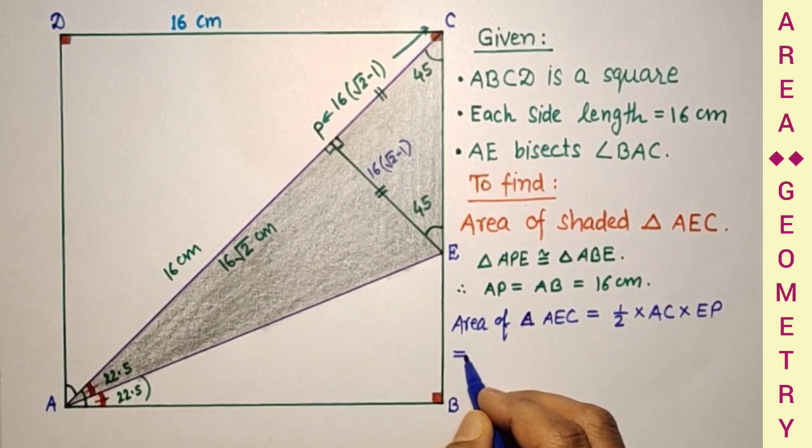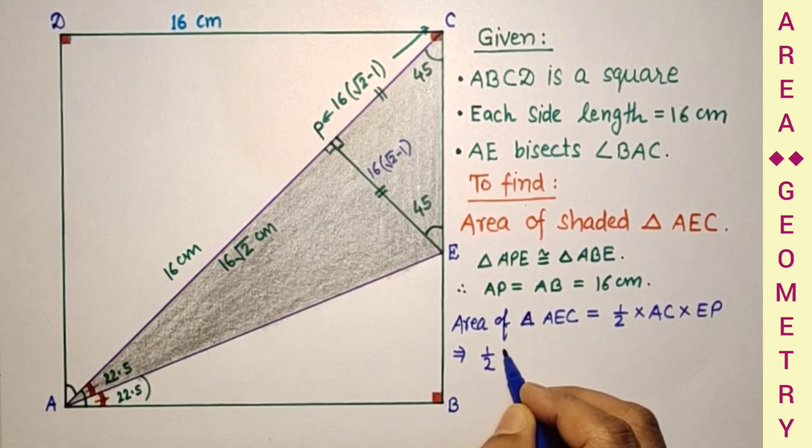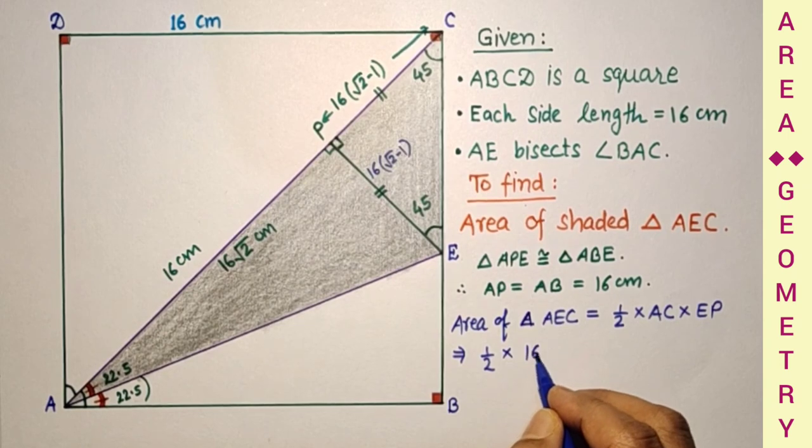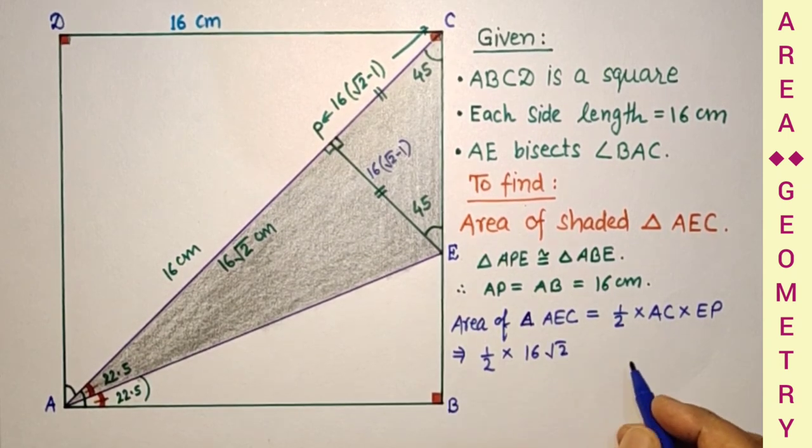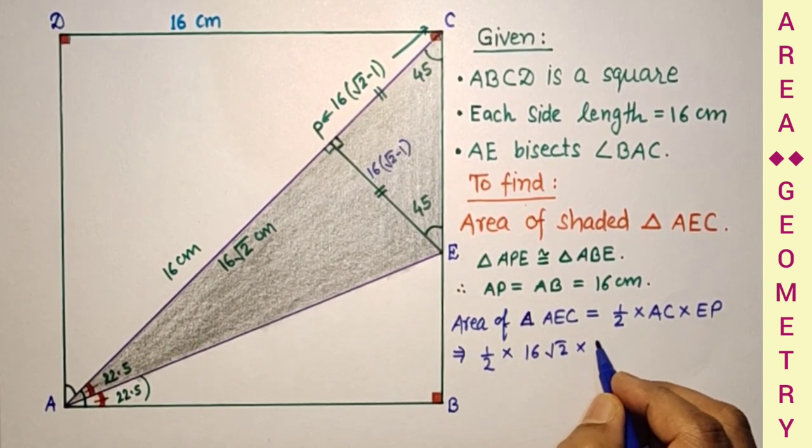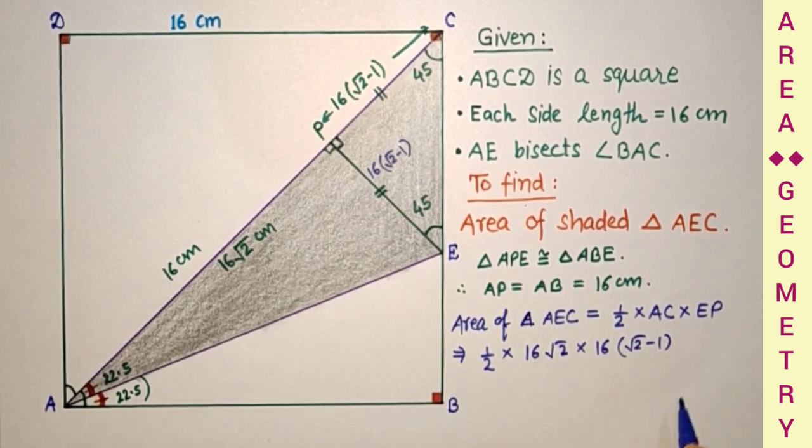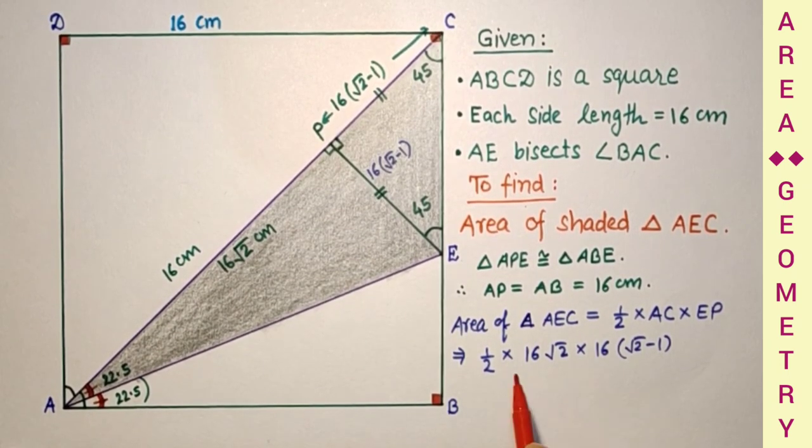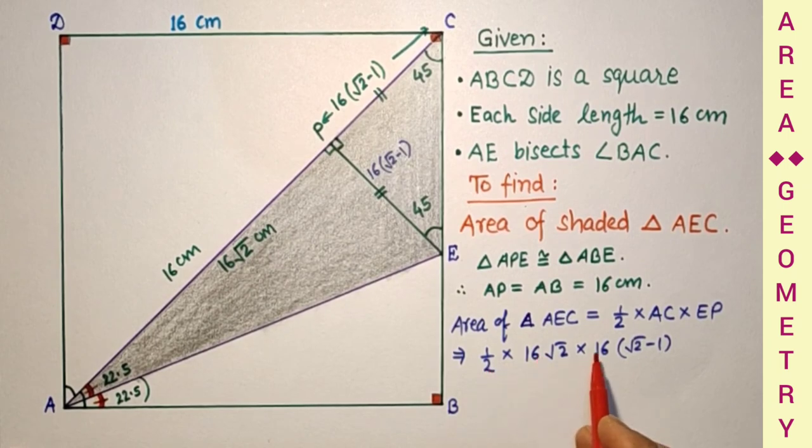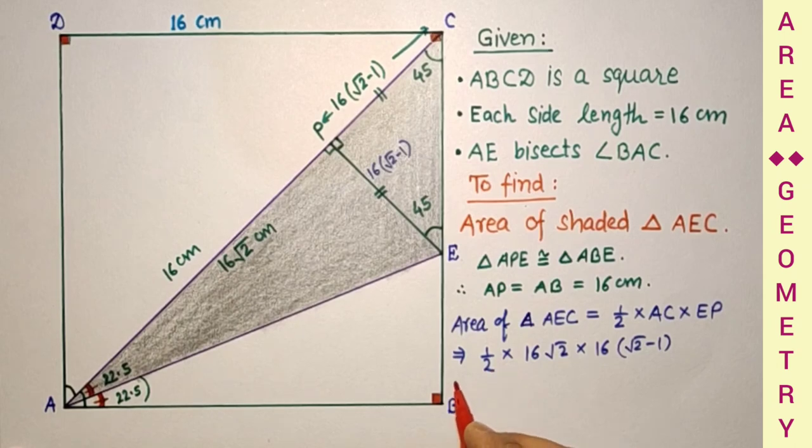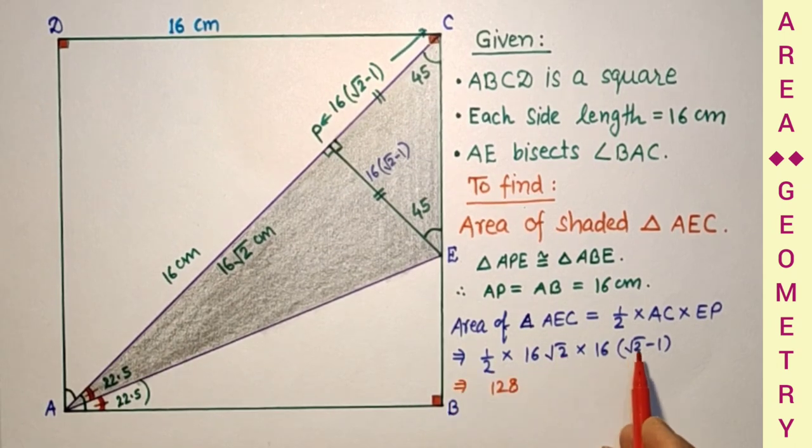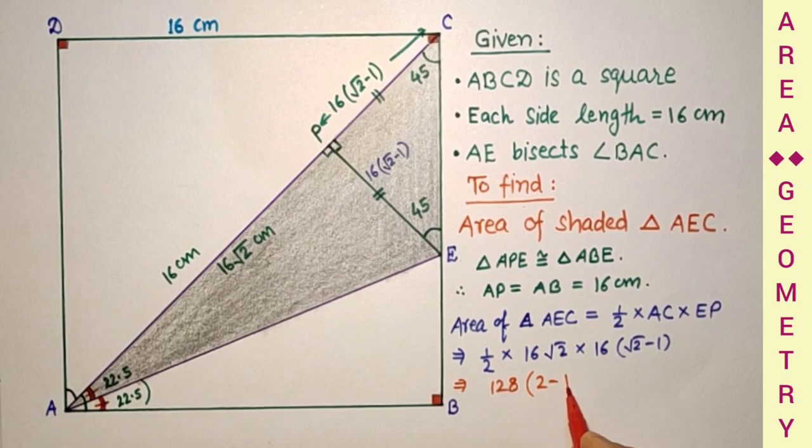That equals half into 16 root 2, 16 root 2 into 16 root 2 minus 1. So that equals, 16 into 16 is 256 by 2, 128. Root 2 into root 2 is 2, minus root 2.